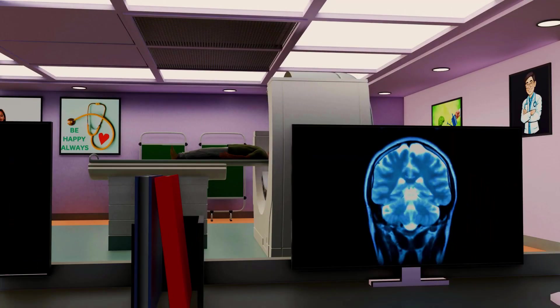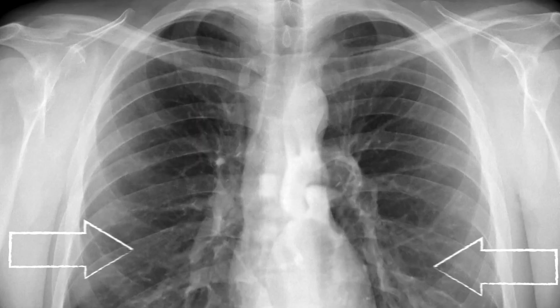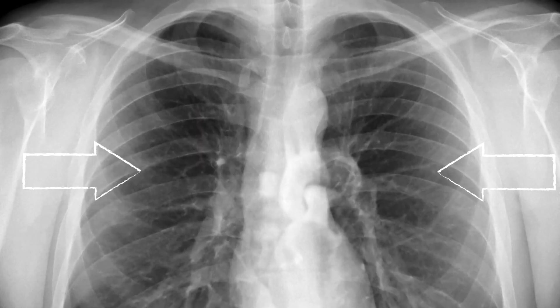The X-rays interact with different parts of the body based on their density. For example, bones have a high density, preventing most X-rays from passing through them.